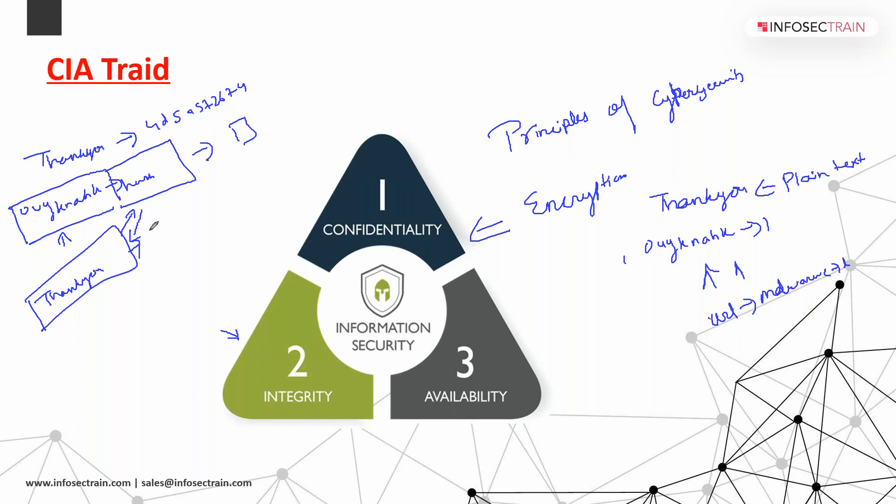Next we have availability — data should be available when it is needed. For example, everyone has an Amazon account and we always shop from there. One fine day there is a big sale on Amazon, and we particularly want something, but we are not able to access that website. We will switch to another e-commerce website. What will Amazon lose? Loss of customers and financial loss — many products will be ordered from other websites.